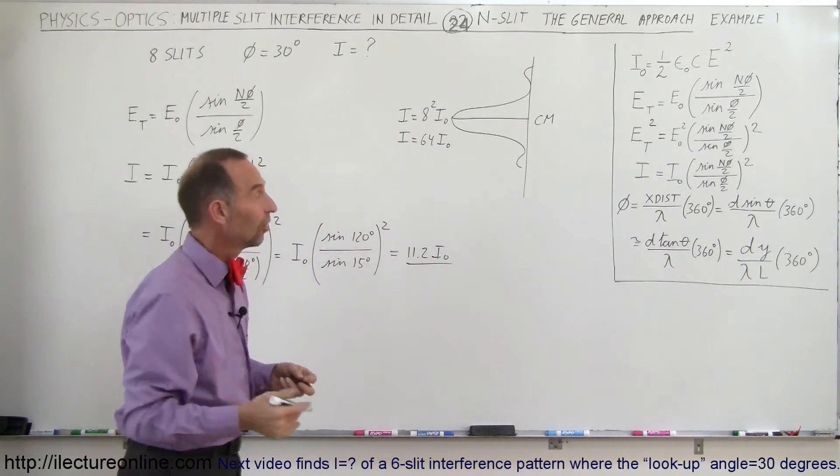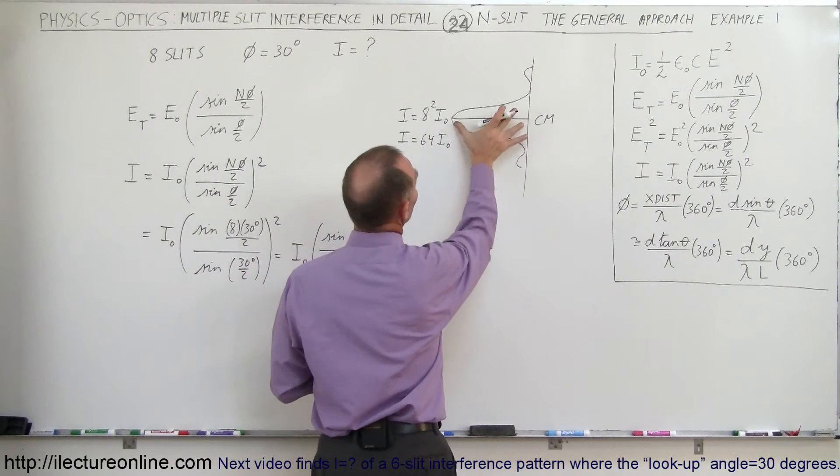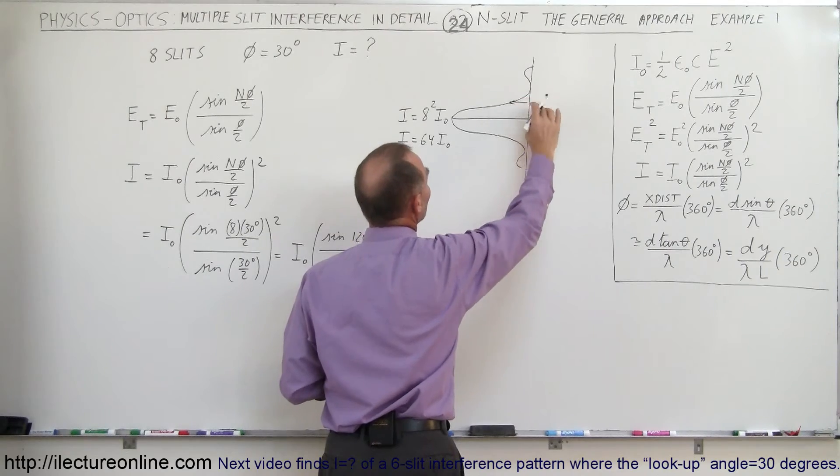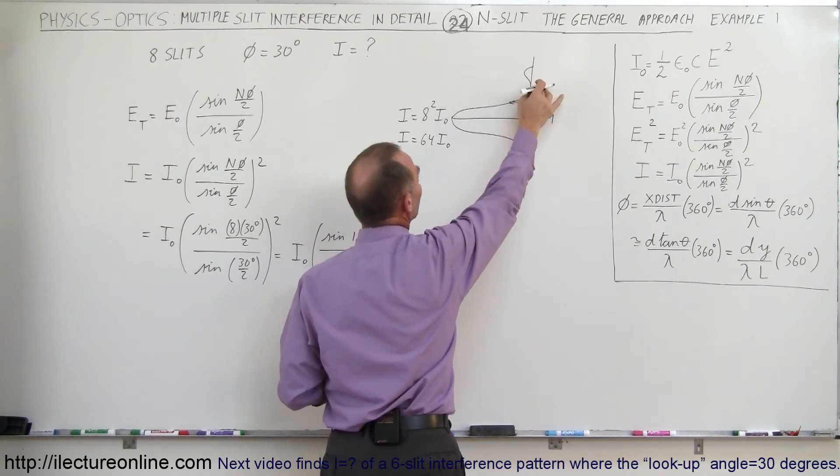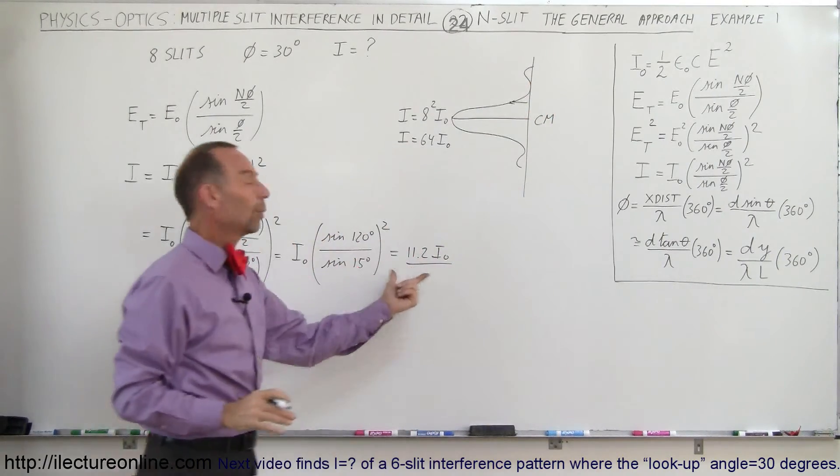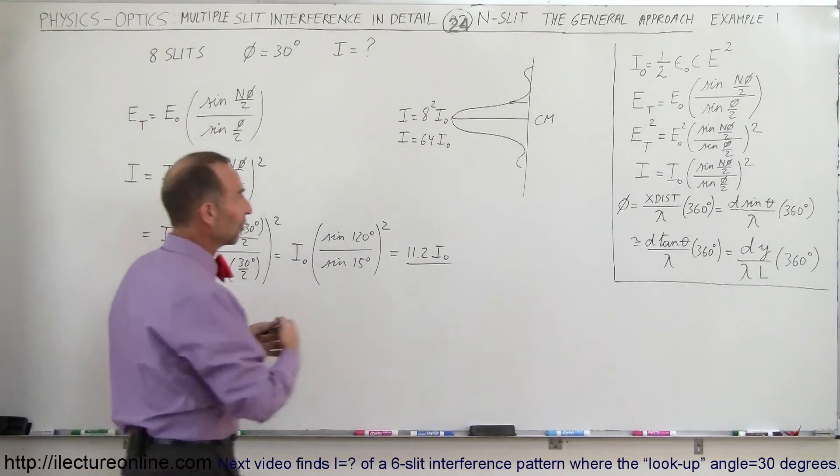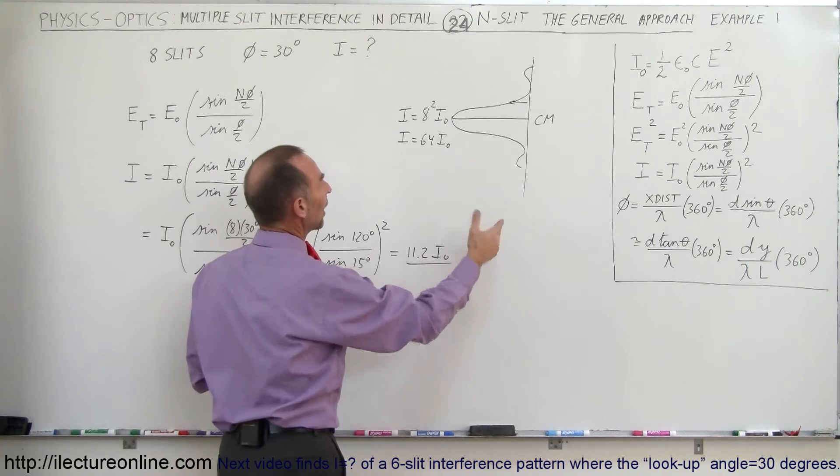So in this general sense, since this is 64, we're probably somewhere around there which means that a 30 degree phase angle puts us not quite at the minimum but towards the minimum with an intensity of 11.2 times the intensity of a single phase or I should say a single ray.